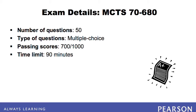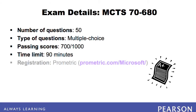The passing score is 700 out of 1,000 or 70%. You have an hour and a half to take the exam. In order to take the exam, you must first register with Prometric. Have personal identifications such as a social security number and a credit card ready when registering. Prometric can aid in finding the closest testing center to you and can also help you by phone if necessary.